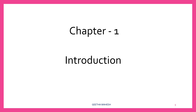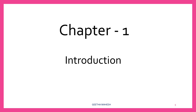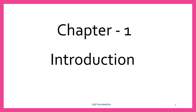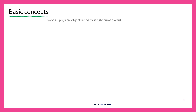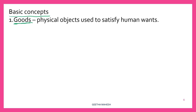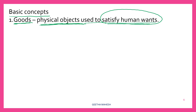Here we are going to start with chapter one: Introduction. Now let us discuss basic concepts. The first basic concept is goods. What do you mean by goods in economics? Goods are a physical, tangible object used to satisfy human wants. They are used to satisfy human wants. Examples: pen, laptop, mobile are examples of goods.